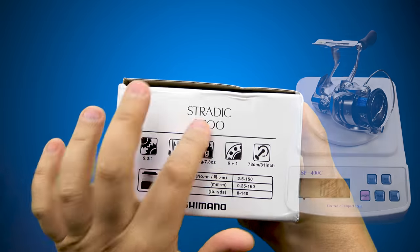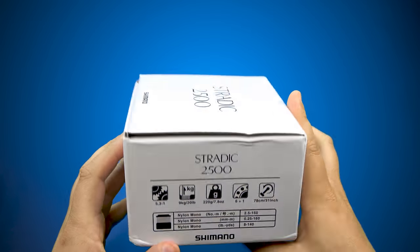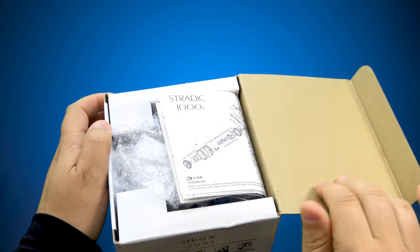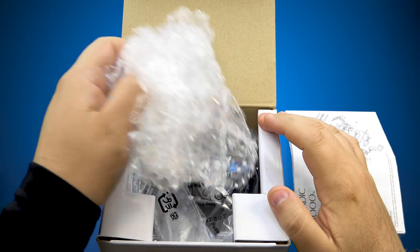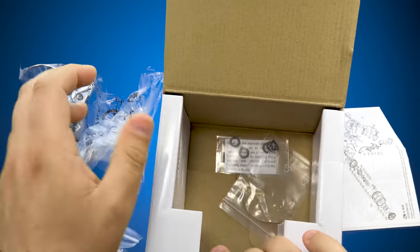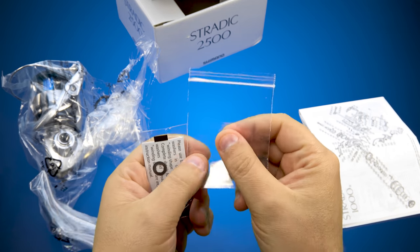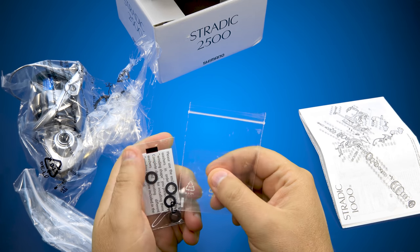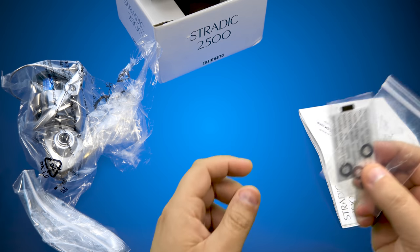Here we have the 2,500-sized 5.3 to 1 gear ratio Shimano Stradic FL. We have the schematic, more bubble wrap on the interior to protect it in shipping. We have some shimming washers, and you have some tape. Usually this tape is used to protect the reel foot, although this may actually be better suited to keep a line on the spool from slipping if you're using braid. And that's it. Nothing else on the inside whatsoever.